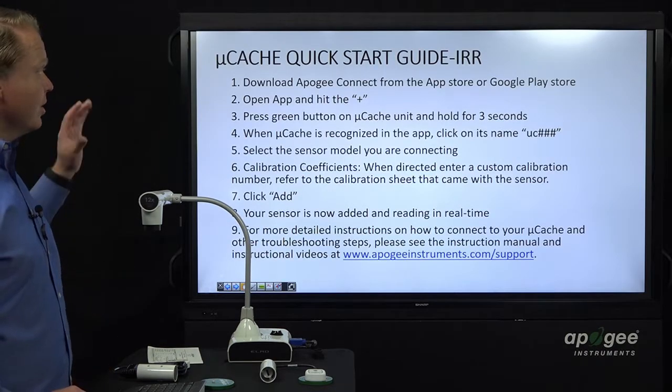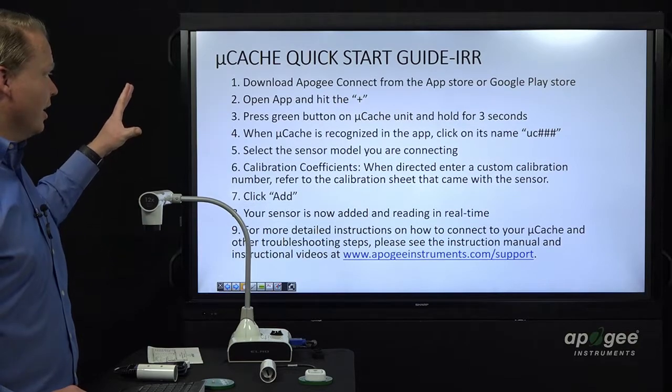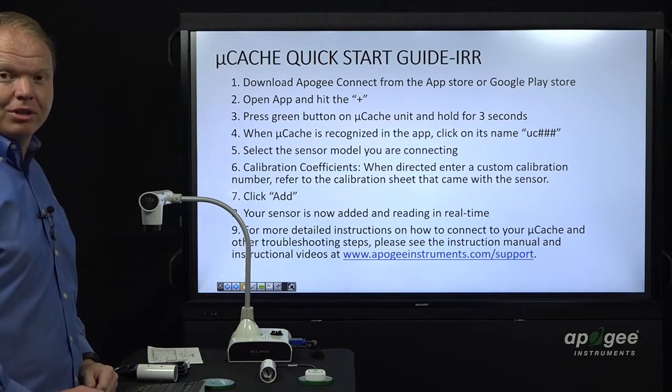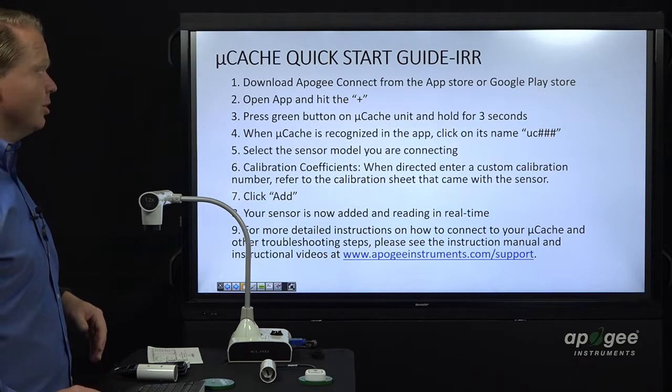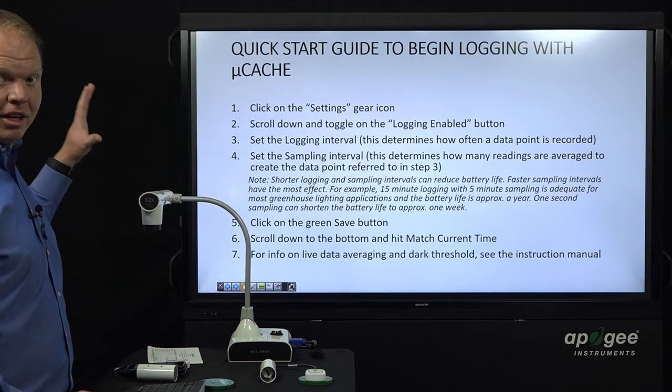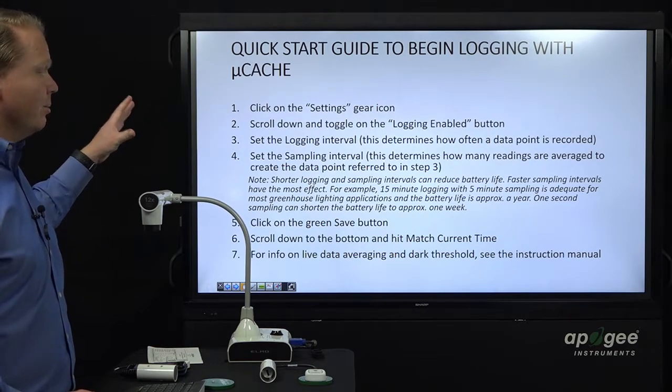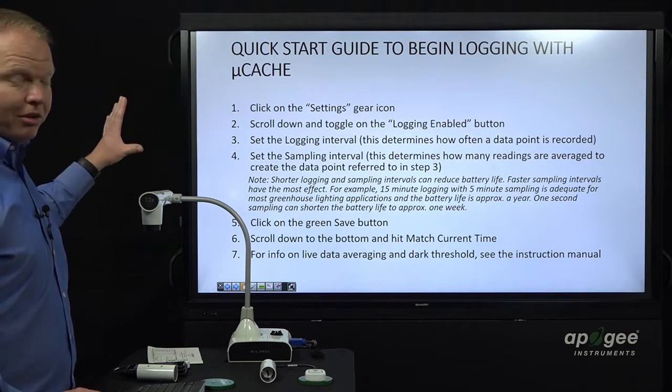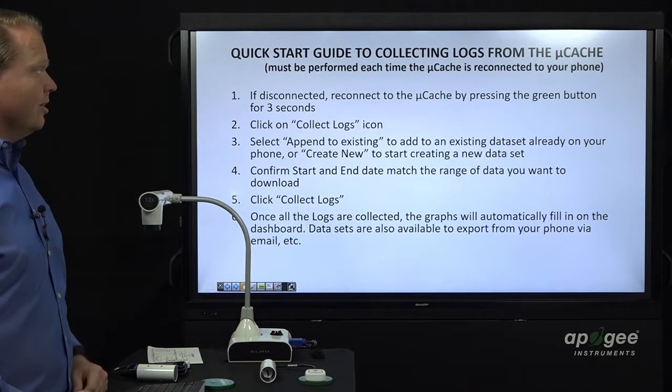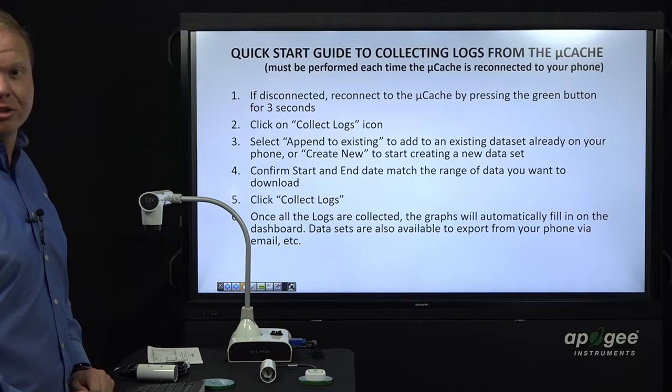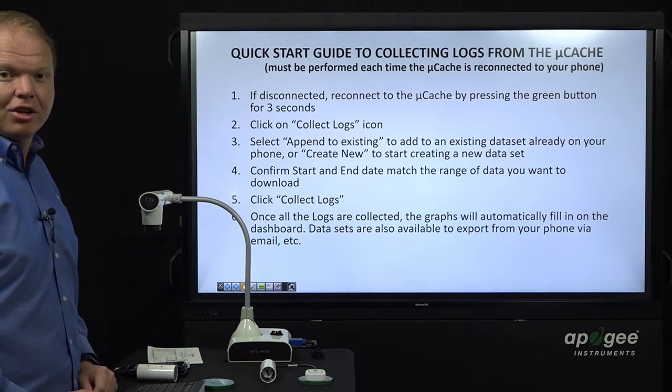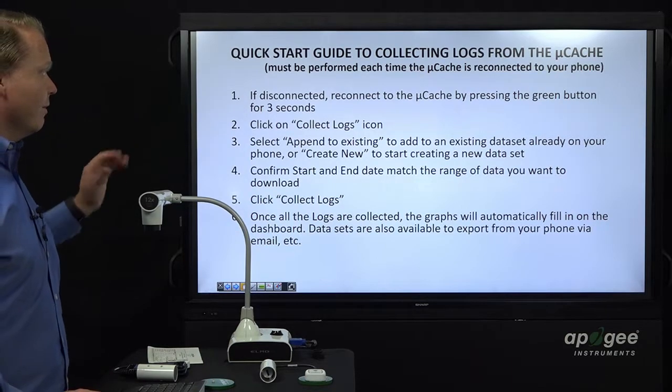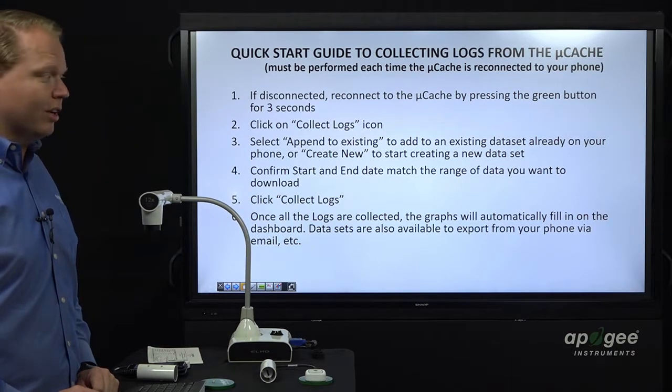This here is the quick start guide on how to connect to it and how to add it. We're going to go through each one of these steps individually. This is here for a reference. You can pause the video as needed. This next one is the quick start guide to begin logging, how to set up the logging intervals. And then this is the quick start guide to collecting the logs. So after you've set it up for logging and then you go back to it, how do you get those logs off so you can view them on your phone. We're going to go through each one of these.